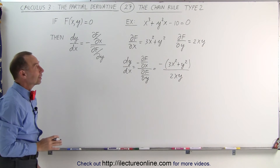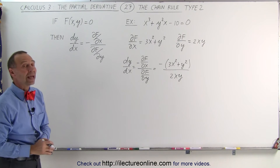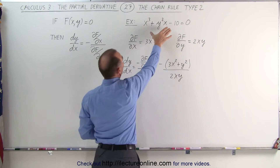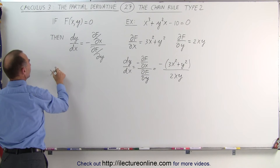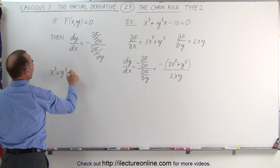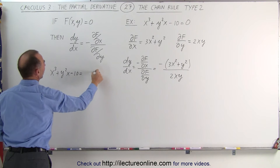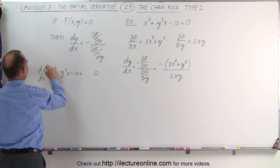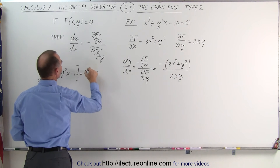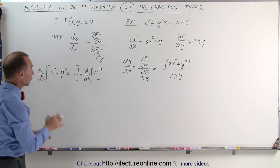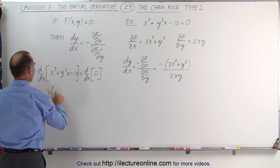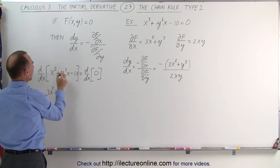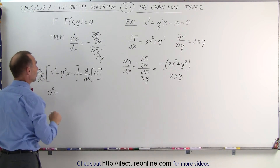To verify this, let's go ahead and find the derivative of this implicitly. We take our example — x cubed plus y squared x minus 10 equals zero — and we take the d/dx of both sides of the equation. The d/dx of the left side must equal the d/dx of the right side. So we get 3x squared plus, and here we have a product rule because we're not taking the partial derivative but the actual derivative.